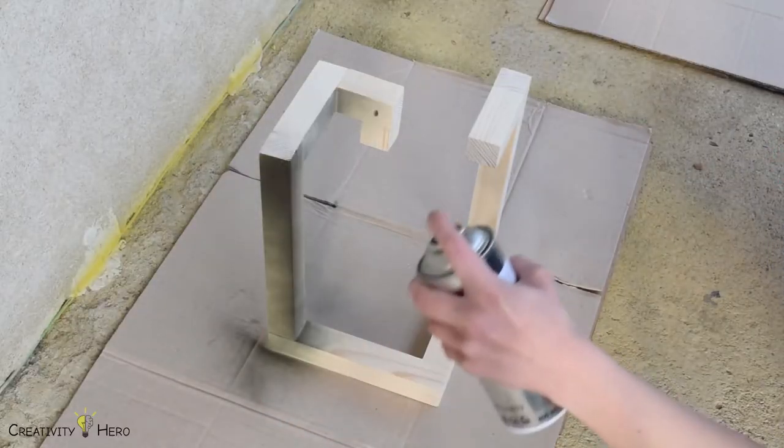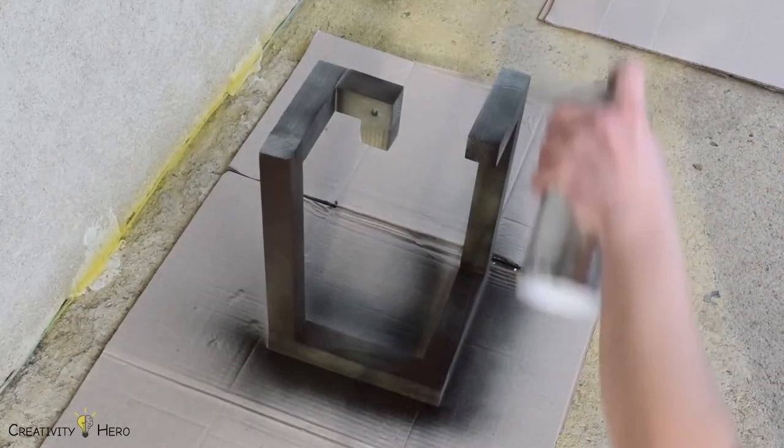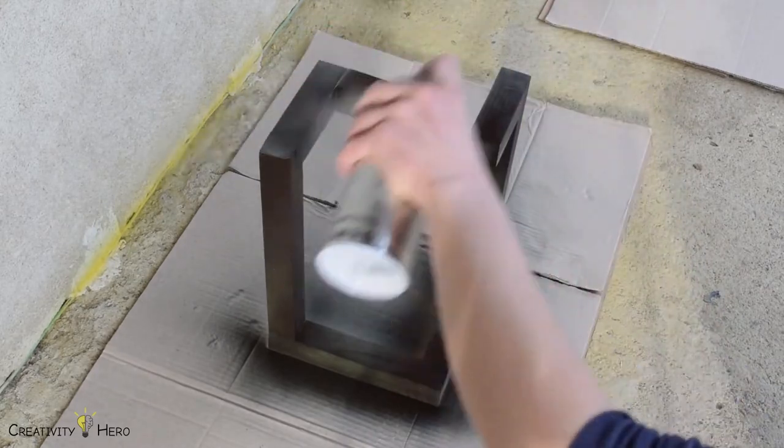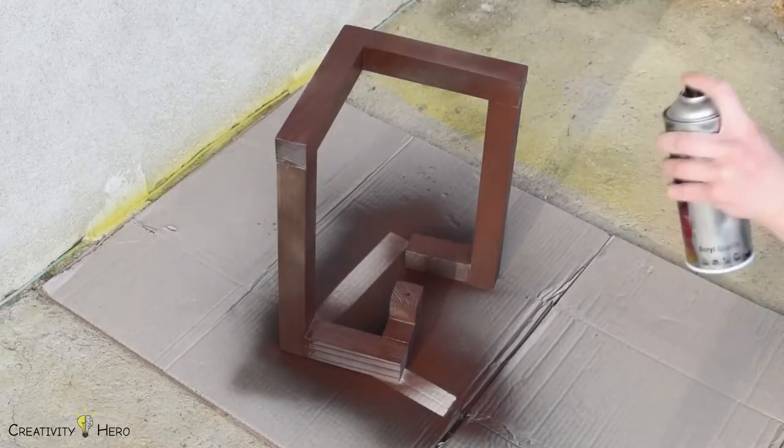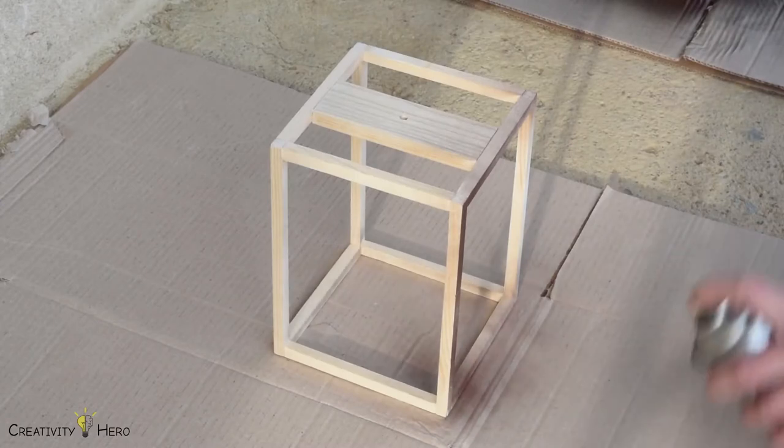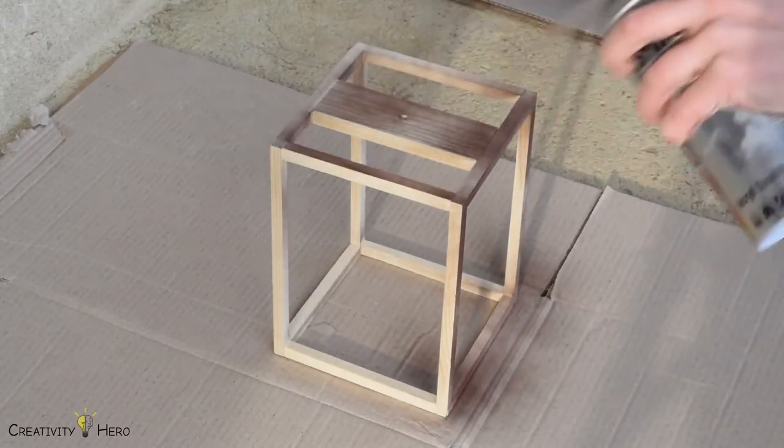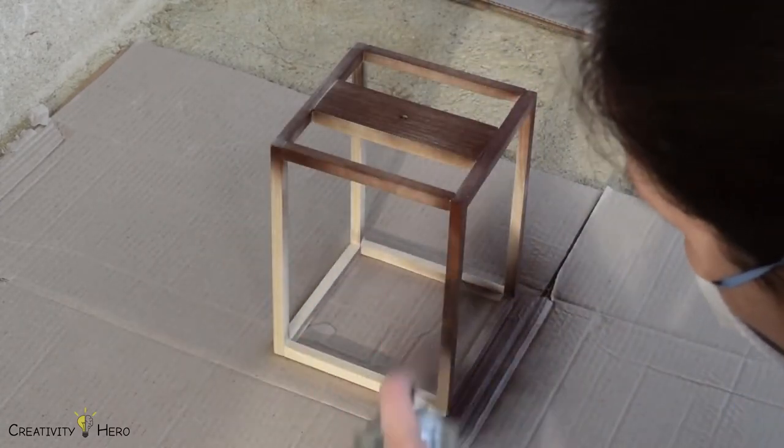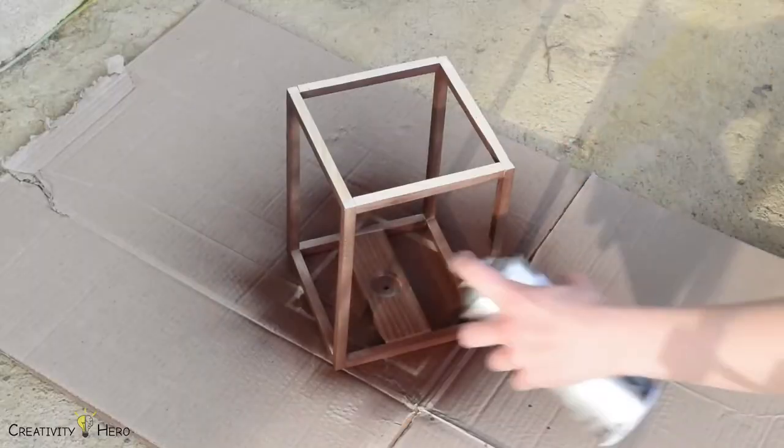Then I finished it off with spray paint. I painted both the base and the frame with chocolate brown spray paint because I wanted to create more contrast between them and the lampshade. I applied two coats of spray paint and left it to dry out.